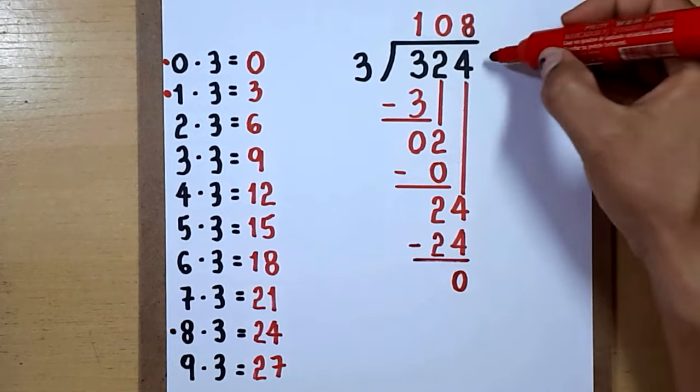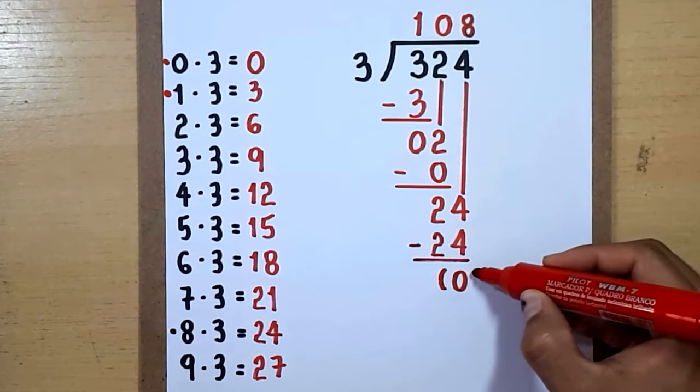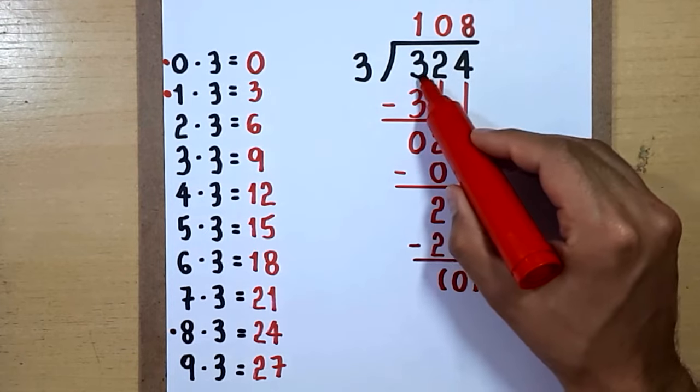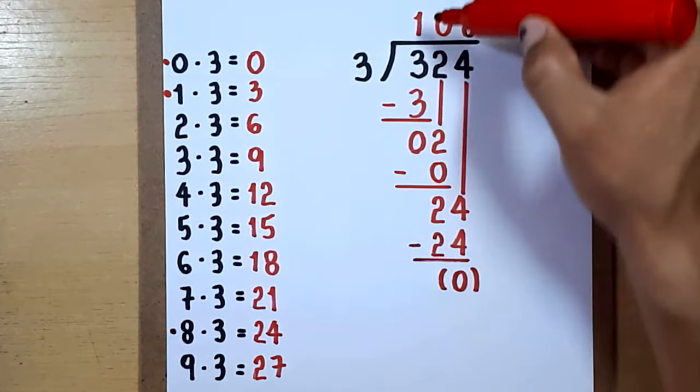Since we don't have any other digits, we finish here. We can now say that 324 divided by 3 equals 108.